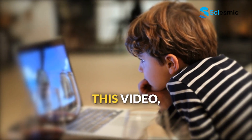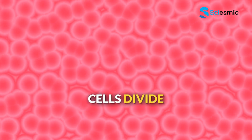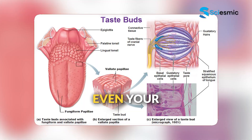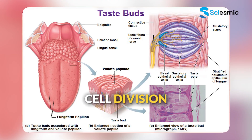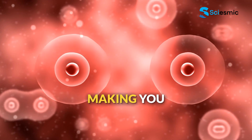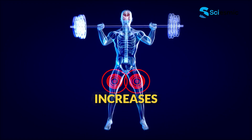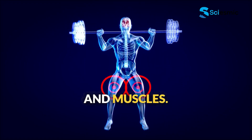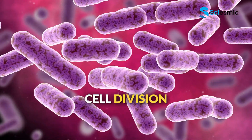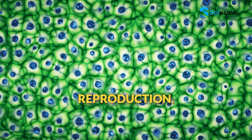Right now, as you're watching this video, millions of cells in your body are actually going through division. Your skin cells divide every two to three weeks to replace old ones. Blood cells are constantly being replaced. Even your taste buds completely renew through cell division every one to two weeks. If you're still growing, cell division is literally making you taller and stronger every single day. During growth spurts, the rate of cell division increases dramatically in your bones and muscles. Every time you heal from a cut, scrape, or bruise, you're witnessing cell division in action — the new skin, blood vessels, and other tissues are all created through cellular reproduction.